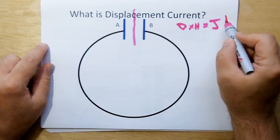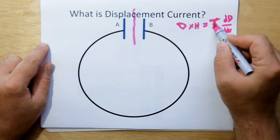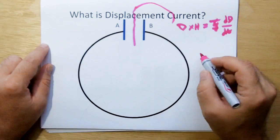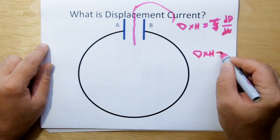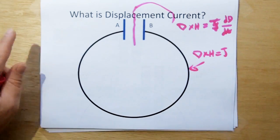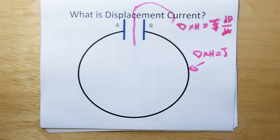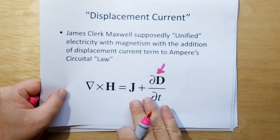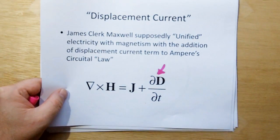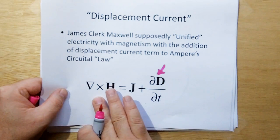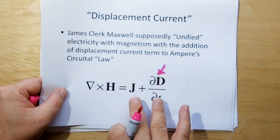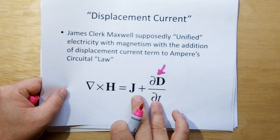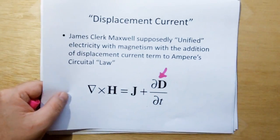∂D/∂t in the gap, and curl of H is equal to J in the wire. And then that's where he was able to put those two things together to say that this is in fact all the contributors to a magnetic field. It's both the current in the wire and the electric field changing across a gap in the capacitor. Both contribute to a magnetic field.